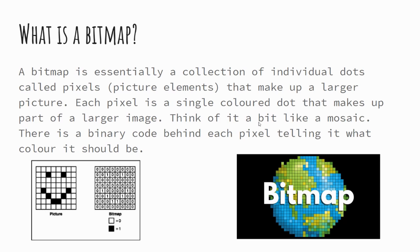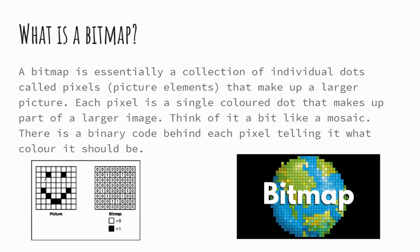Looking at what a bitmap is: a bitmap is essentially a map of bits — a grid reference system used to store an image. On the bottom left you can see an example of a black and white image where pixels make up the black and white dots. Pixels, being picture elements, are tiny dots with colours associated with them that make up a larger picture, like a mosaic. In this example, zeros are whites and ones are blacks — a one-bit image using one binary number to store a colour. On the right, different colours are introduced, so there is more binary data behind each pixel, but each individual pixel still holds a single colour and when pieced together makes up part of a larger image.